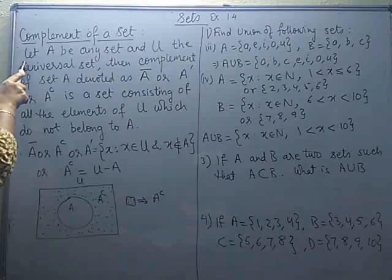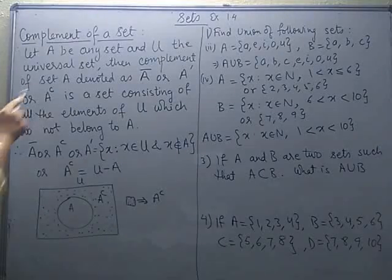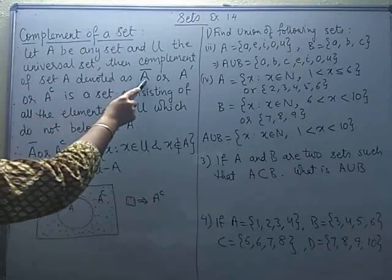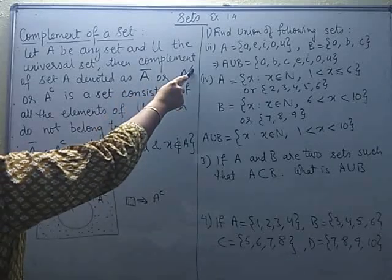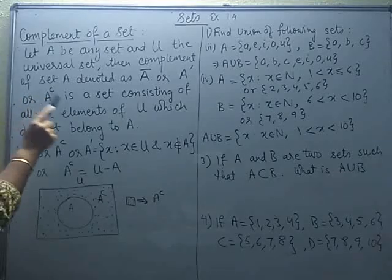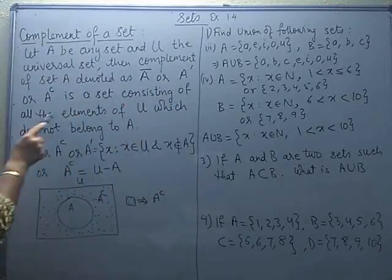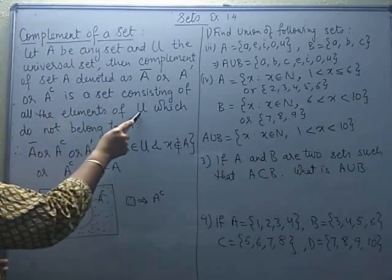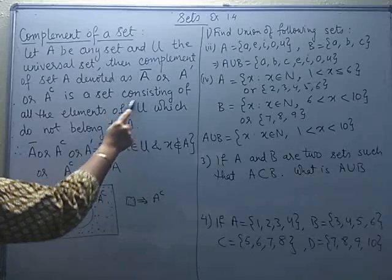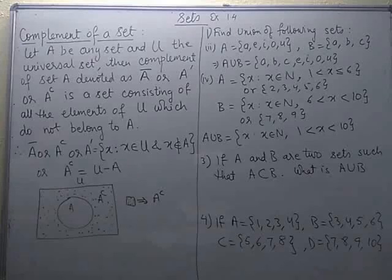I have defined it here. It says if A is any set and U is the universal set for it, then complement of set A — which can be denoted as A with a bar, A with a dash, or A with a superscript C for complement — will be a new set consisting of all the elements of U, that means all the elements of the universal set, which do not belong to set A. The element will be there in the universal set but it will be out of A. You can understand this better with a Venn diagram.